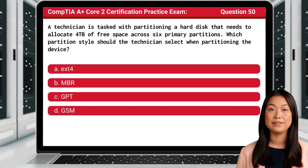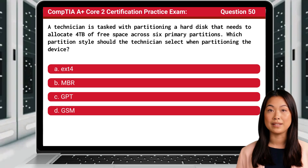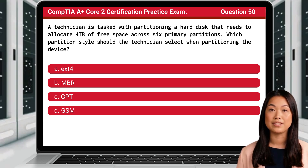Question 50. A technician is tasked with partitioning a hard disk that needs to allocate 4 terabytes of free space across 6 primary partitions. Which partition style should the technician select when partitioning the device?